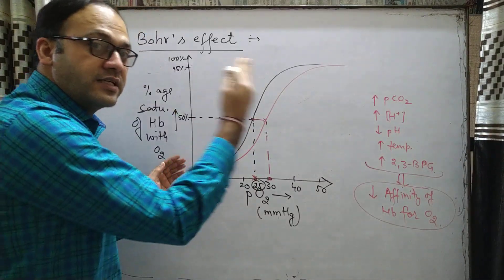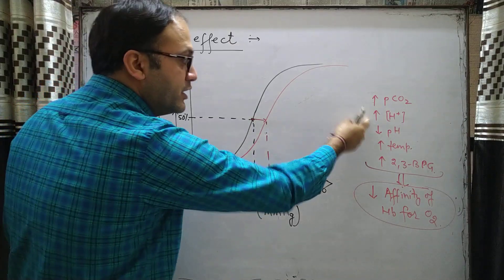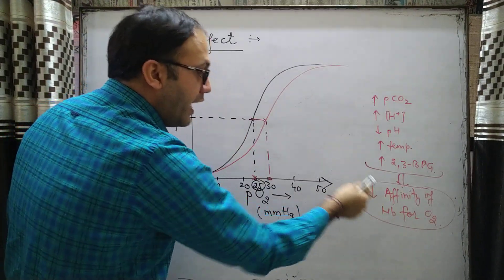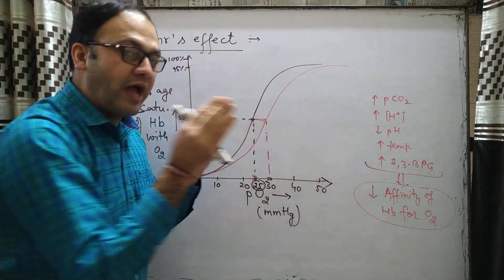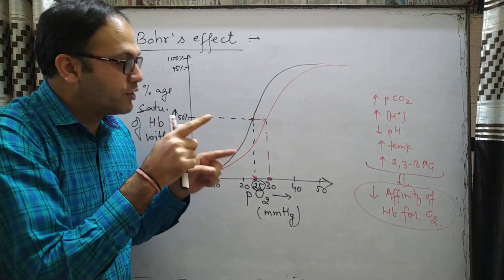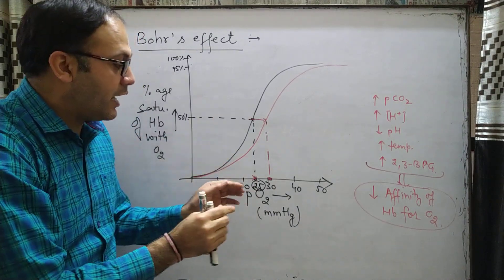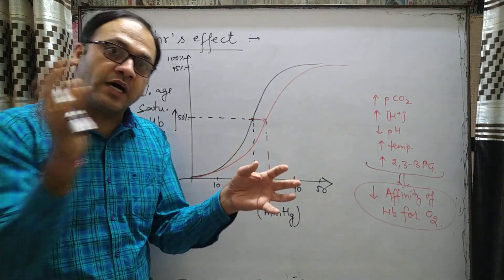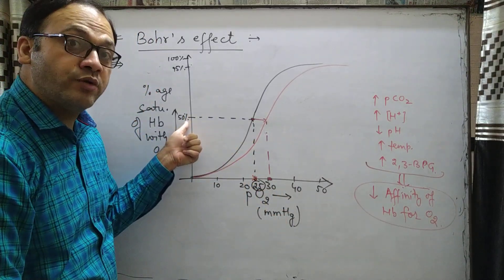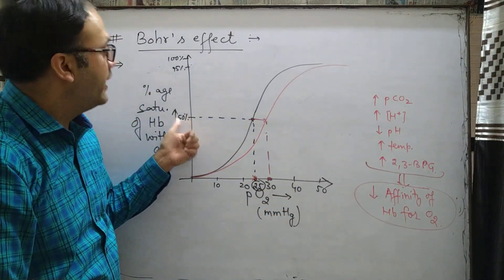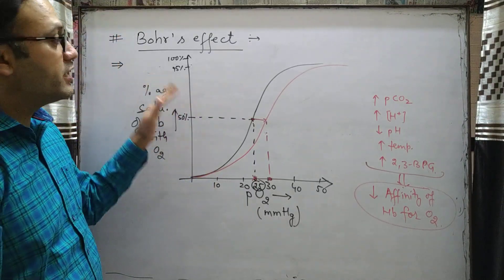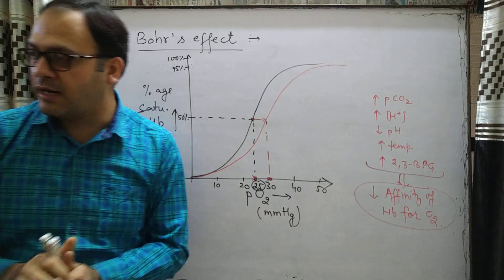When the curve shifts to the right side, it is because the affinity of hemoglobin for oxygen decreases. As a result, a higher partial pressure of oxygen is needed for hemoglobin to become 50% saturated with oxygen. That is the Bohr effect. Now let's see the significance of the Bohr effect.